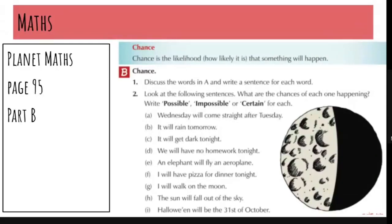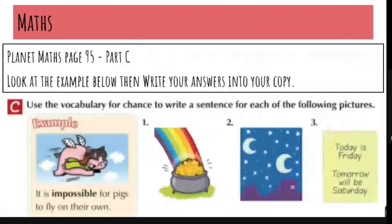So your task today is to go on and you're going to do, first of all, you're going to look at page 95 part C. I want you to look at that kind of peachy box. There's a good example in that. And then you have to write one sentence for each of those pictures. Number one, the rainbow with the pot of gold, two, this dark sky, and then three, today is Friday, tomorrow will be Saturday. You have to write one chance sentence for each of those pictures.